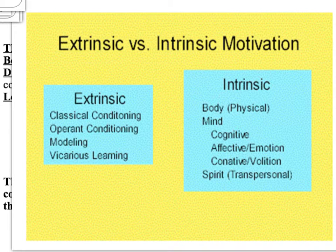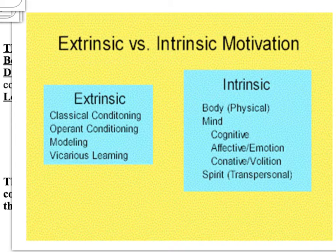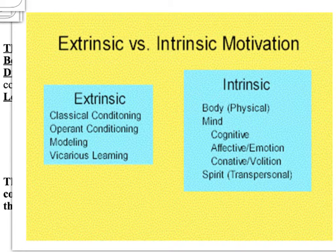Extrinsic motivation is supported by classical conditioning, operant conditioning, and modeling. Modeling refers to how we observe other people and, if we are impressed, want to act like them — seen in fashion trends and hero figures. Small children idealize their parents, teachers, and even cartoon characters as sources of motivation. Vicarious learning also plays a role: when we see others rewarded, we want to imitate them; when we see others punished, we avoid those actions.